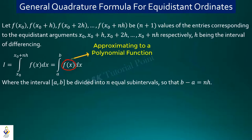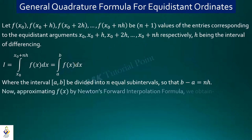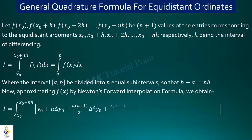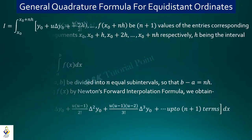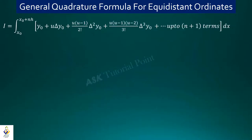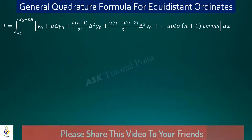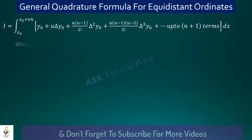We will approximate f(x) to a polynomial function by using Newton's forward interpolation formula. Then we integrate this approximate function over the range x₀ to x₀+nh. We define the substitution variable u as u = (x − x₀) / h.